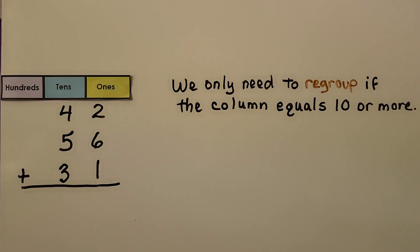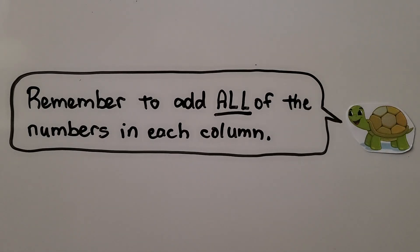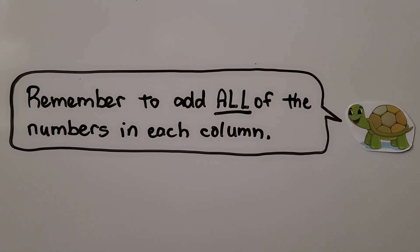We only need to regroup if the column equals 10 or more. Here we have 6, 7, 8, 9. We have 9 for the ones place. That's not enough to regroup. In our tens place, we have 4 plus 5 is 9, 10, 11, 12 tens. And 12 tens is 100 with 2 tens. It's equal to 129. Remember to add all of the numbers in each column.